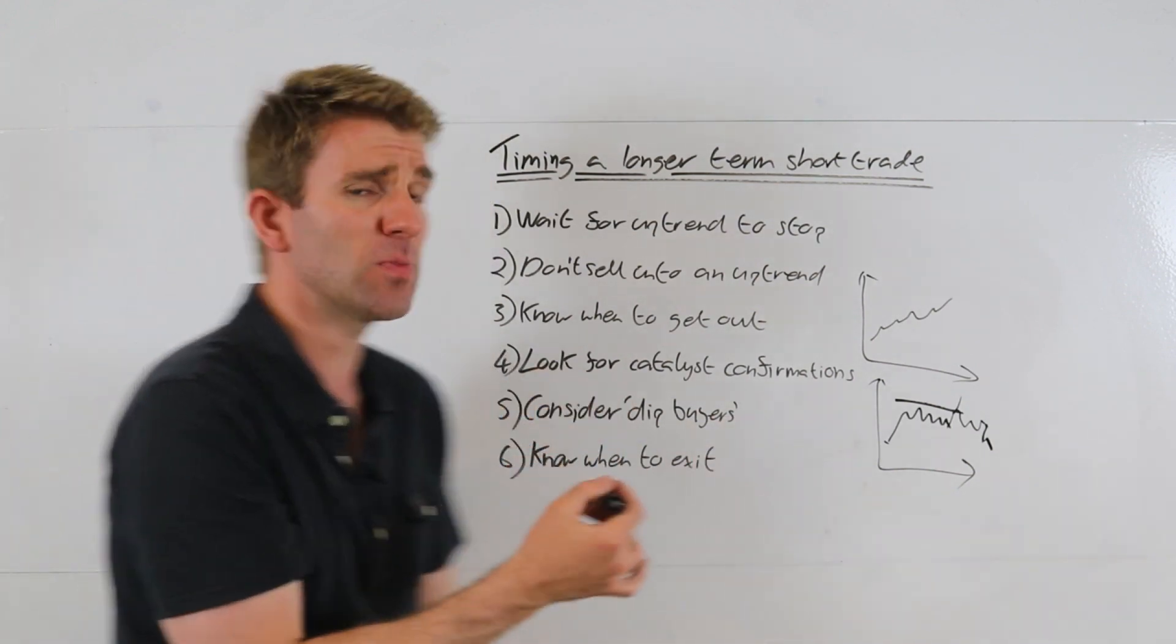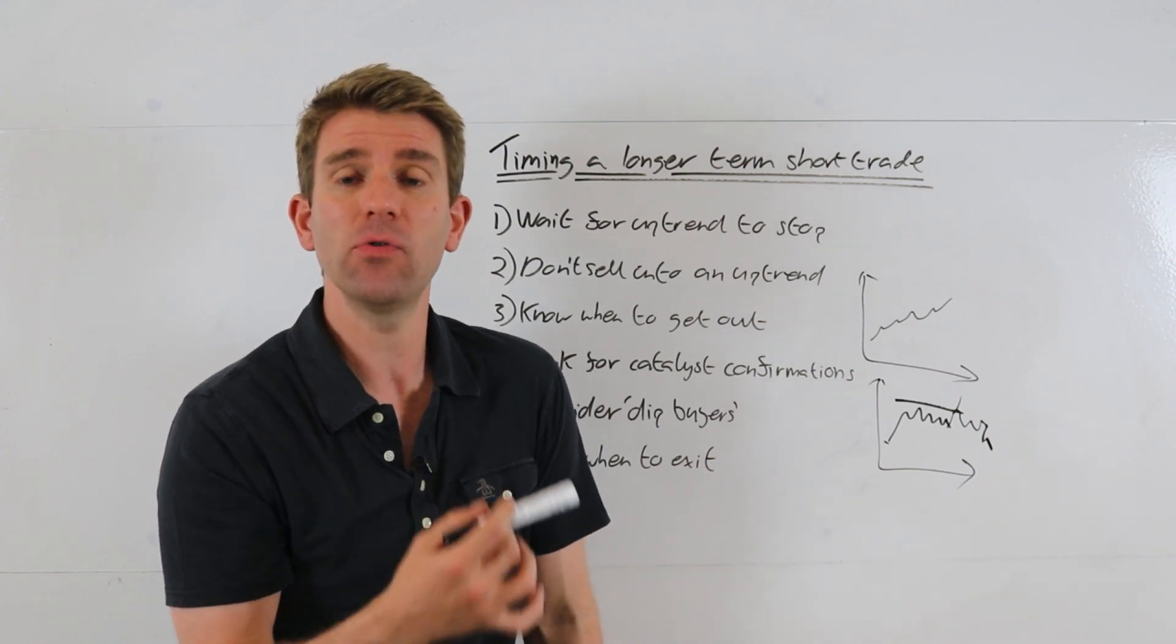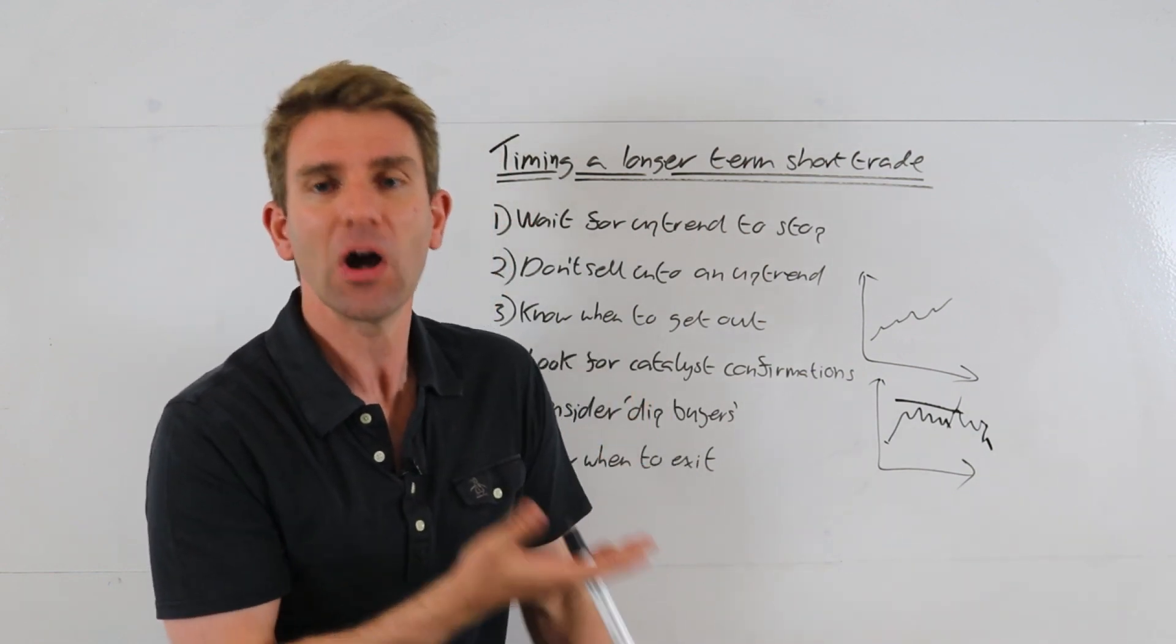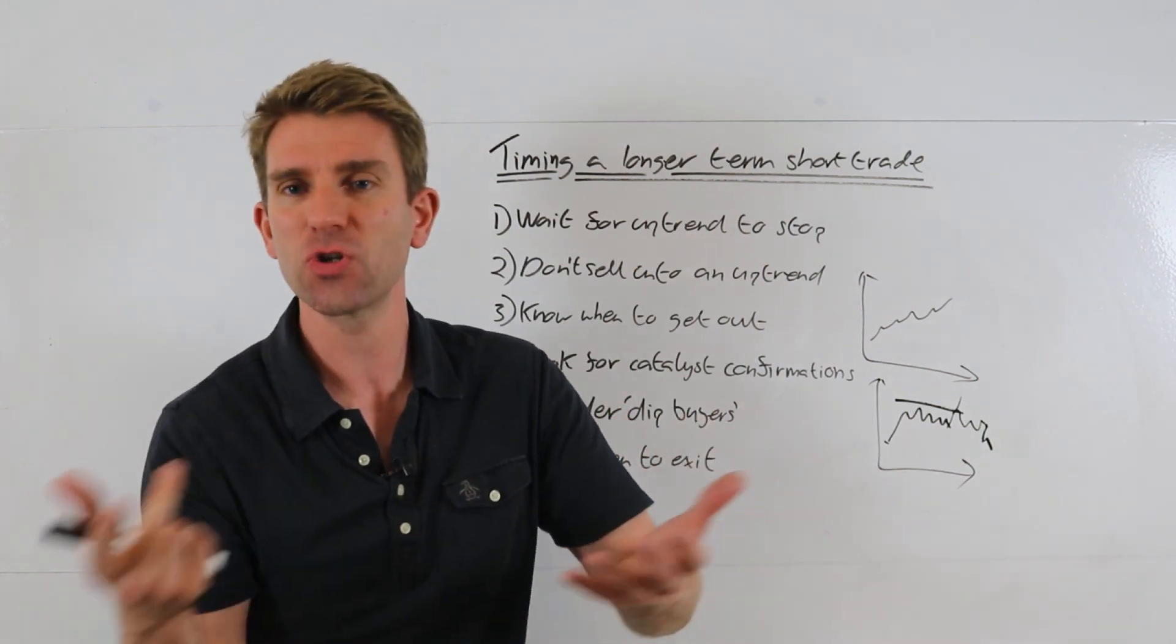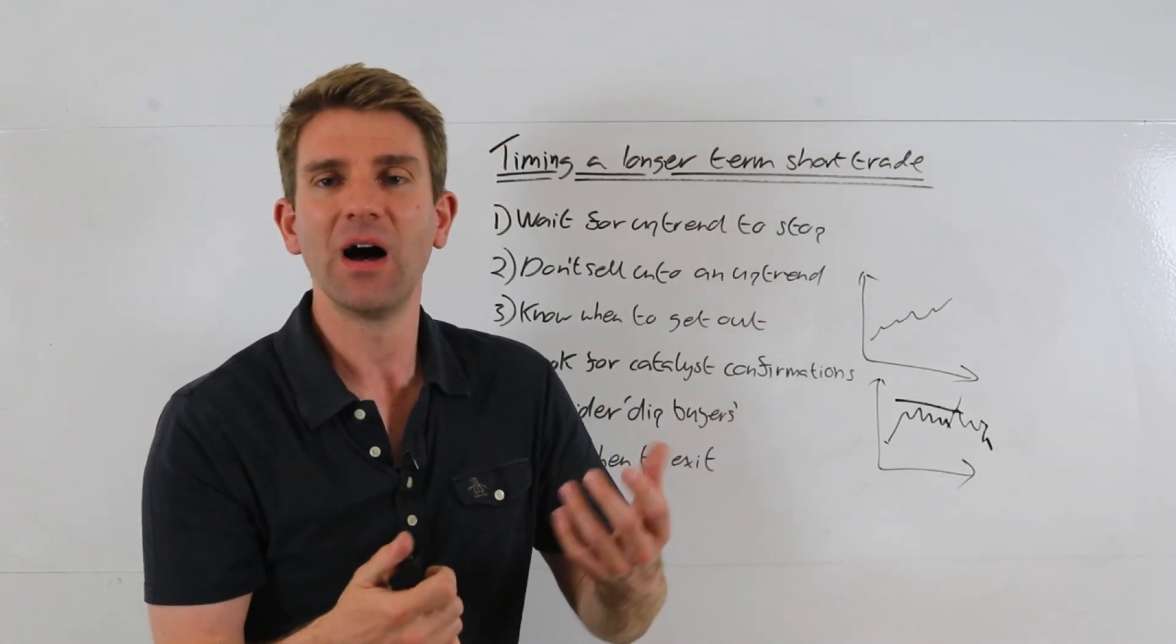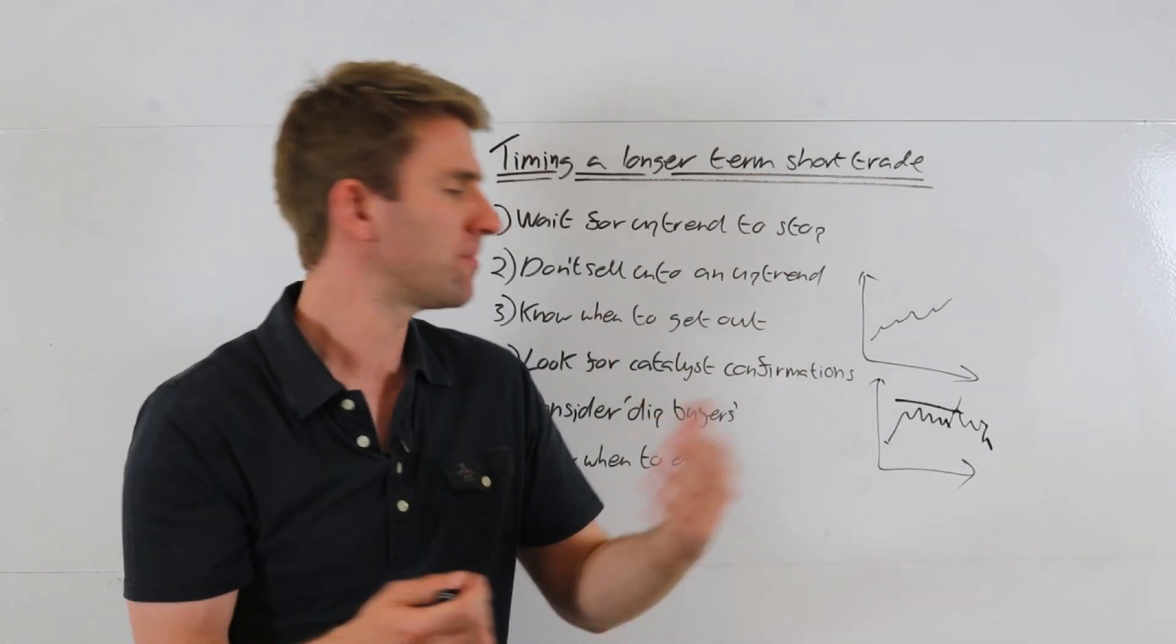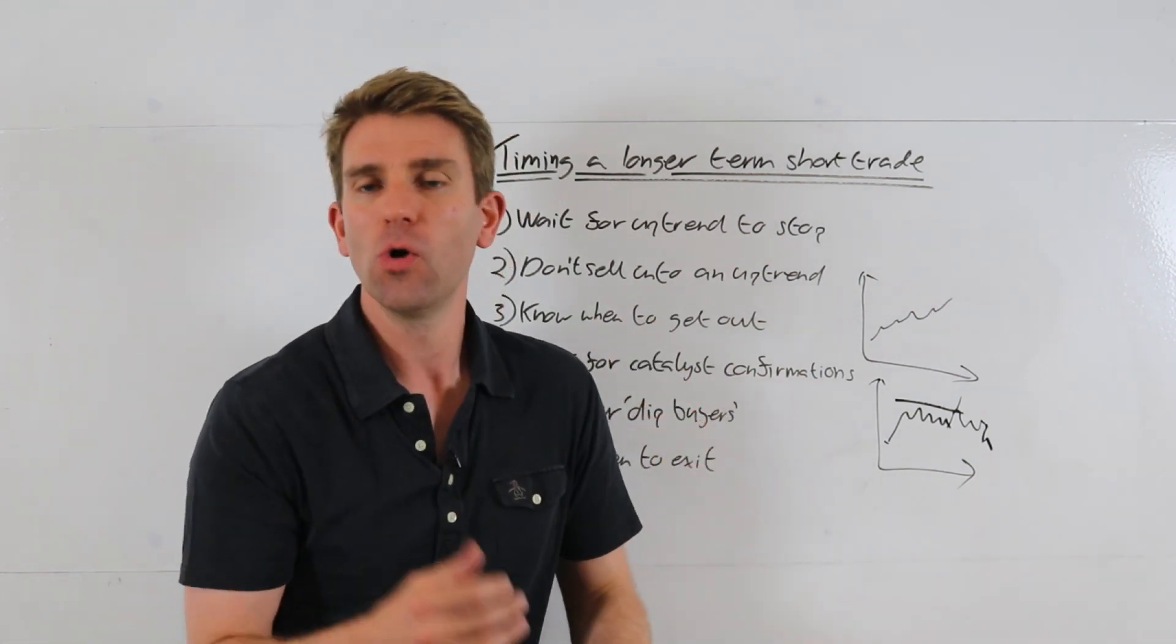And the final thing is, when you're right, know when to exit. So what level is really a level that looks bargain for a buyer—a real punt, like, 'Oh, well I'll buy it there, it's a good punt, it's this, it's that.' And that's where you want to be out. You want to be out on the level where people are just buying it just because it could recover, or a good technical level, really low technical level.